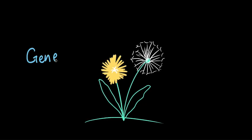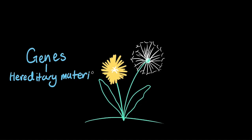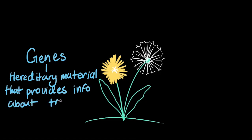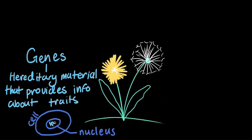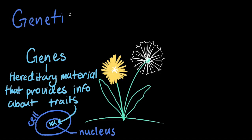Let's take a moment to review what genes are. Genes make up the hereditary material inside an organism's cells. Genes provide the information about what traits an organism has. So, the reason that our dandelion has yellow petals and develops fluffy white seed heads lies within its genes. Any influence genes have on the way an organism grows is called a genetic factor.